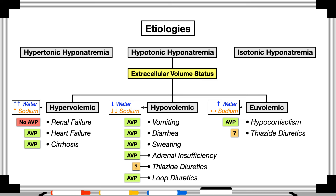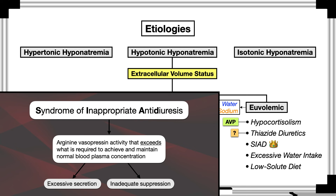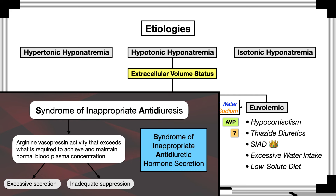Euvolemic hyponatremia features the syndrome of inappropriate antidiuresis, or SIAD, excessive water intake, and a low-solute diet. SIAD is the most common cause of hyponatremia. It's defined by arginine vasopressin activity that exceeds what is required to achieve and maintain normal blood plasma concentration, whether due to excessive secretion or inadequate suppression. SIAD has long been referred to as SIADH — syndrome of inappropriate antidiuretic hormone secretion — but authors are phasing that term out because it doesn't capture issues related to arginine vasopressin suppression.